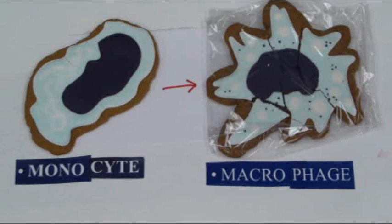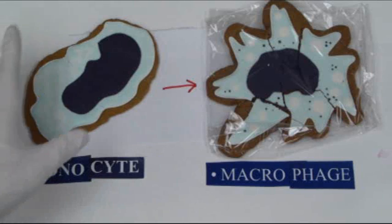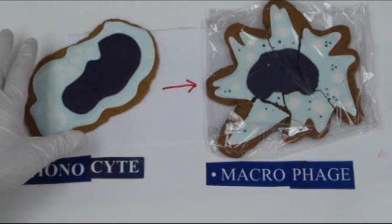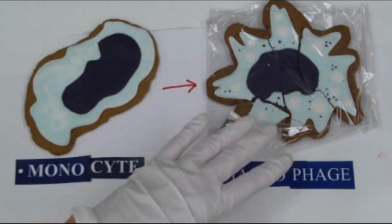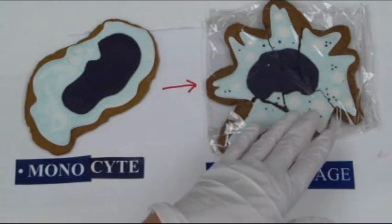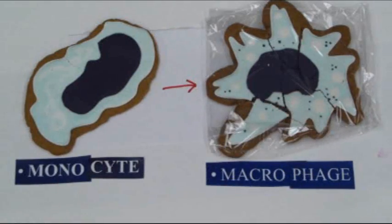The macrophage's job is to engulf and digest cellular debris and pathogens. The macrophage will also stimulate other cells called lymphocytes to produce antibodies against the pathogen that it has encountered. We can see these monocytes circulating in blood, and sometimes we can see them in the outlying tissue, but usually by that time they have become macrophages.